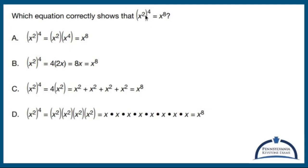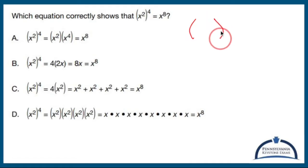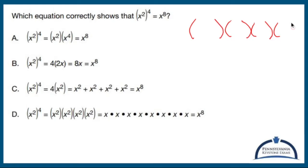Which equation correctly shows that x squared in parentheses to the fourth is x to the eighth? So it kind of wants us to really rip this apart. The way I view it: I have something to the fourth power, and that something is a parentheses. So that means parentheses times parentheses times parentheses times parentheses, and inside each parentheses you have x squared.